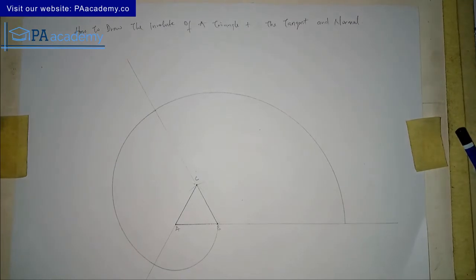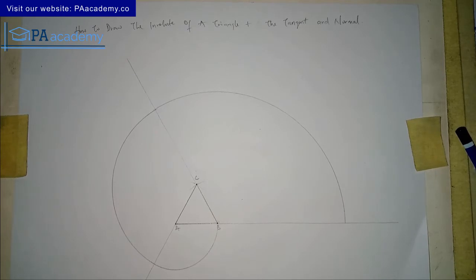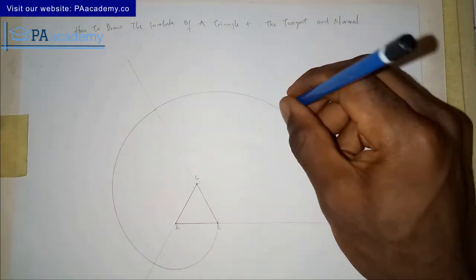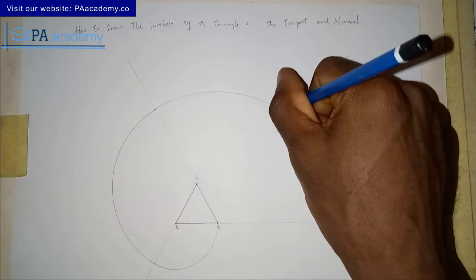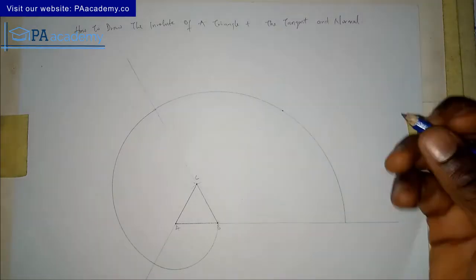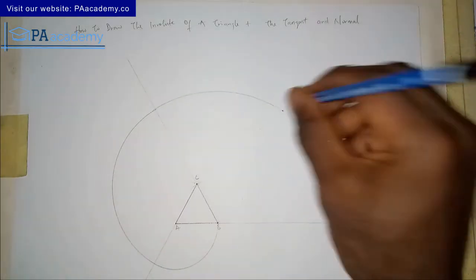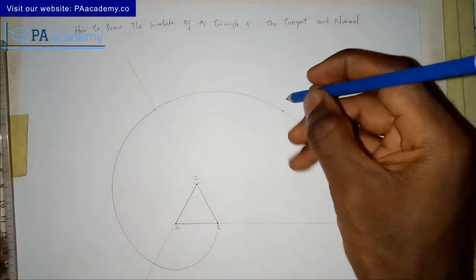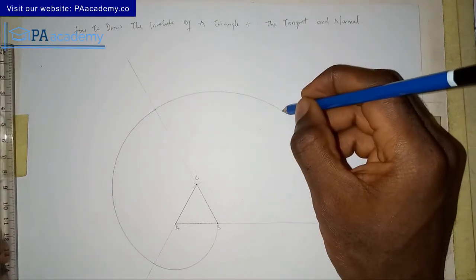With this, we already have our involute. But don't forget you are still going to draw the tangent and the normal to this involute. Let's say for example we are asked to draw the tangent and normal from a specific point on our involute. We've just picked that point. The first thing we are going to draw is the normal.